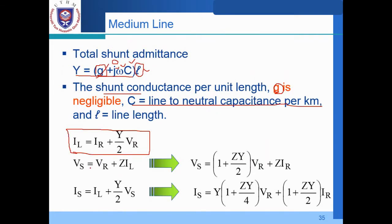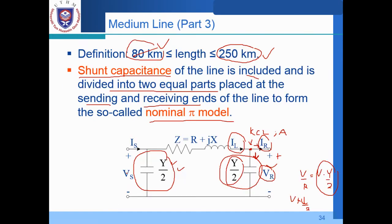And then from here, this is similar. So similar as what we have seen in the short model. So VS equal to VR plus ZIL. So we can see from this, the same shape. Also we have VS over here. So we have this one, IL multiplied by Z as well as the VR at the receiving end part.